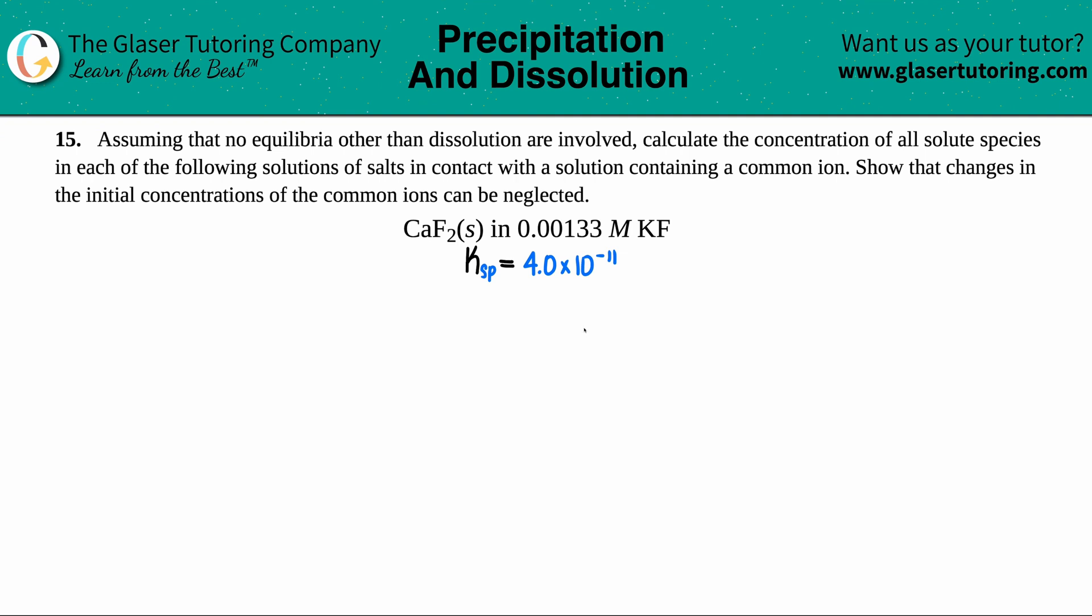Number 15, assuming that no equilibria other than dissolution are involved, calculate the concentration of all solute species in each of the following solutions of salts in contact with the solution containing a common ion. We have calcium fluoride, CaF₂ solid, and this is in 0.00133 molar of potassium fluoride, KF.